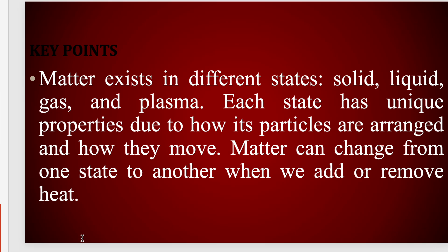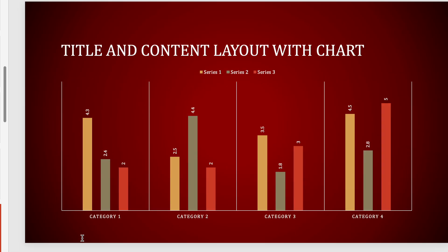Key points: matter exists in different states — solid, liquid, gas, and plasma. Each state has its own unique properties due to how its particles are arranged and how they move. Matter can change from one state to another when we add or remove heat.